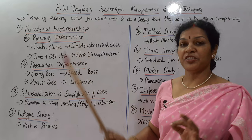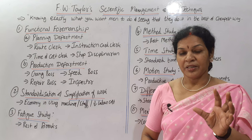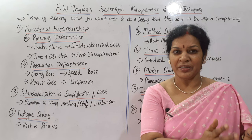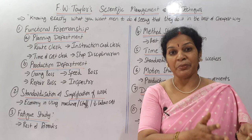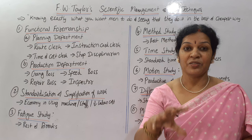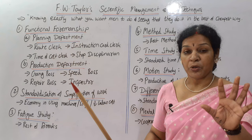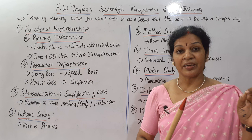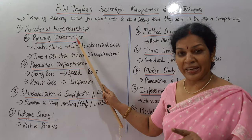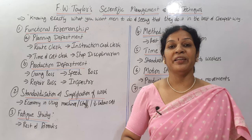First one is functional foremanship. Taylor decided to divide the work among some foremen. Foremen are just like supervisors. Work and responsibility are given to the supervisors, or foremen, and these people are going to control the workers at the ground level who are taking care of production. As per functional foremanship, total eight foremen are there, each given different kinds of responsibilities. They are divided into two departments: a planning department and a production department.